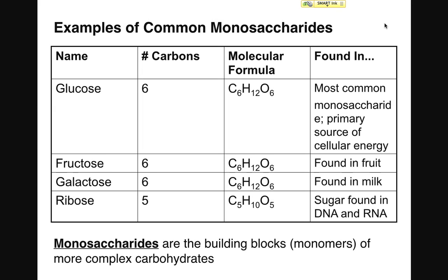I'd like you to be familiar with four types of monosaccharides: glucose, fructose, galactose, and ribose. If you look at the molecular formula for glucose, fructose, and galactose, all three of these monosaccharides have the same molecular formula. But these are different molecules — what we're dealing with are structural isomers, molecules with the same molecular formula but different structural formulas.